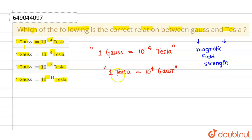So from these two quantities, Tesla is a bigger quantity as a bigger measure of magnetic field strength. So from these four options, option 1 is correct and rest all options are incorrect. I hope you understood.